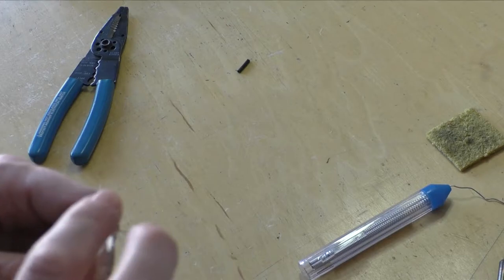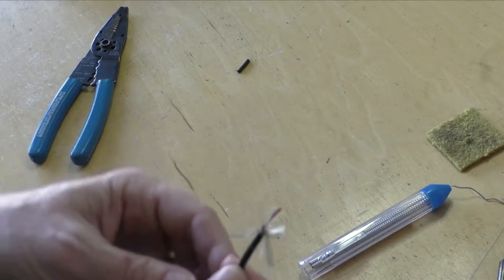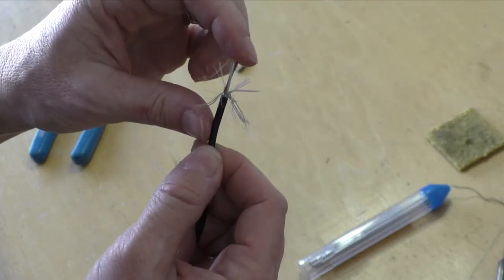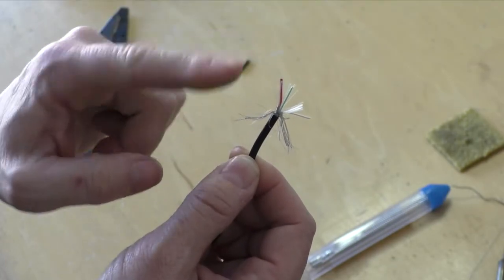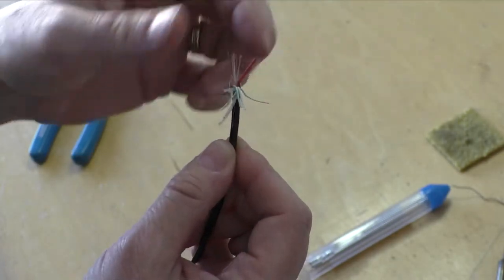You don't have to worry about the green and the white. Those are data cables. So all we're concerned about is positive and ground. So those will just get out of the way.